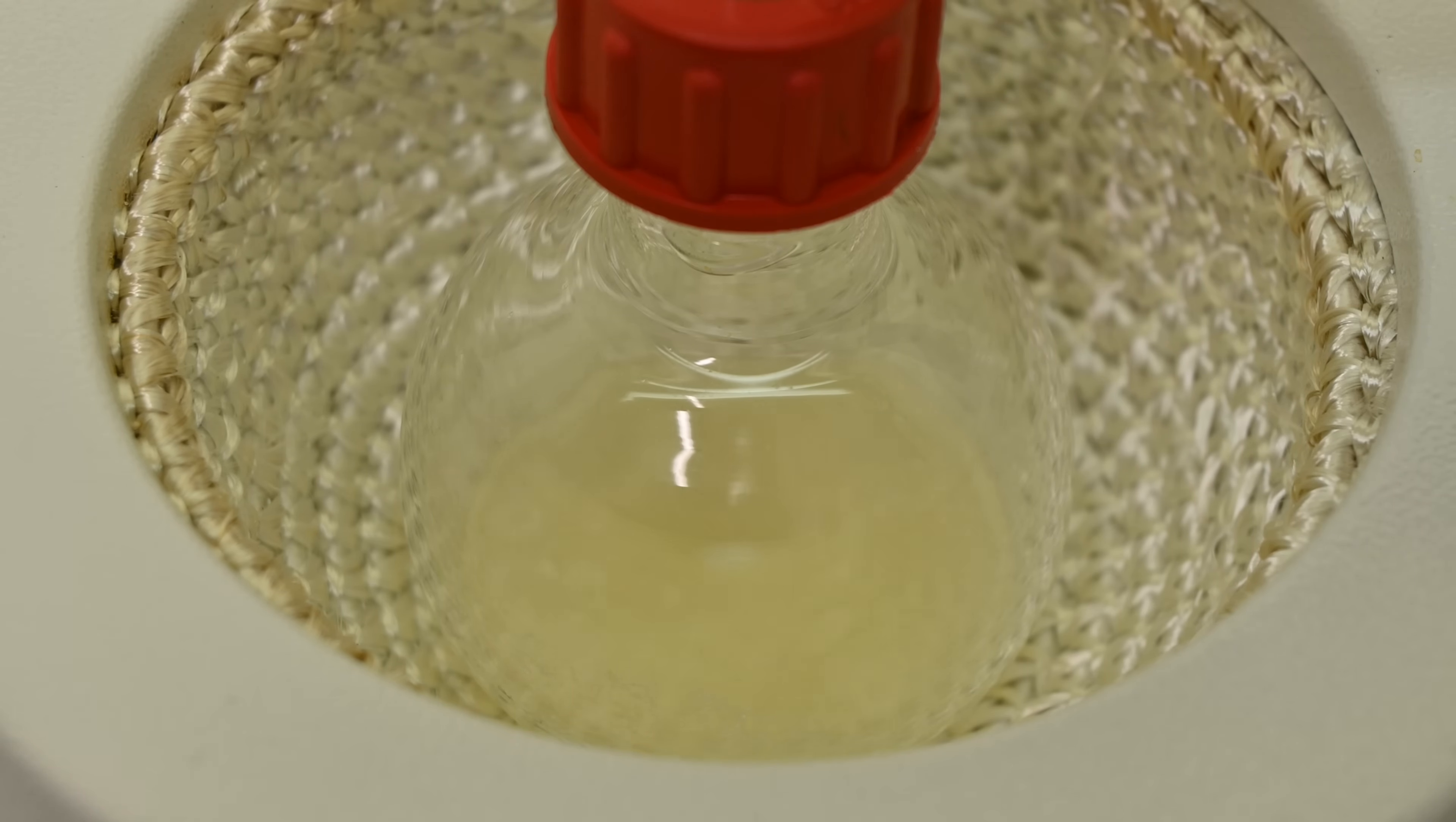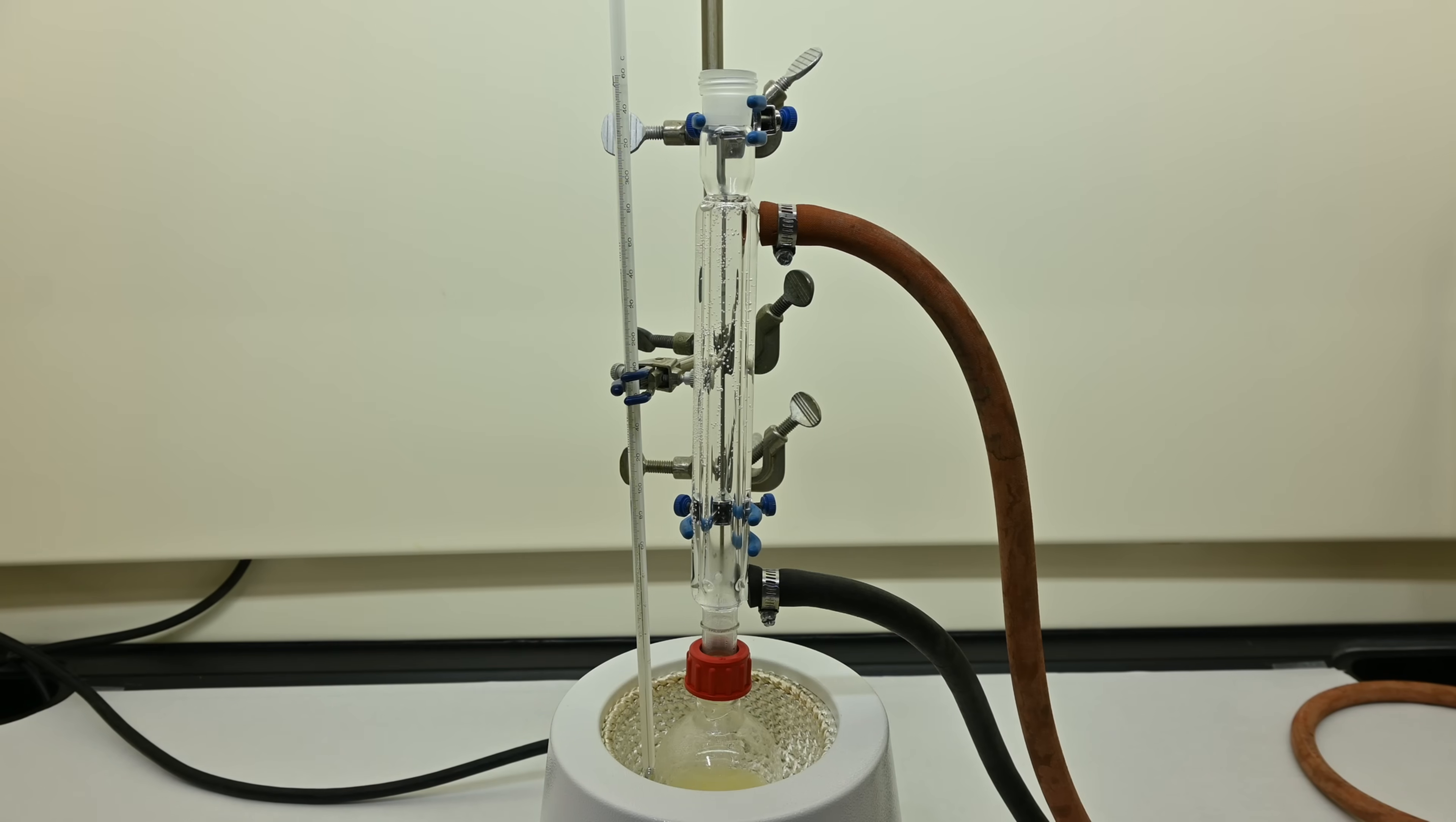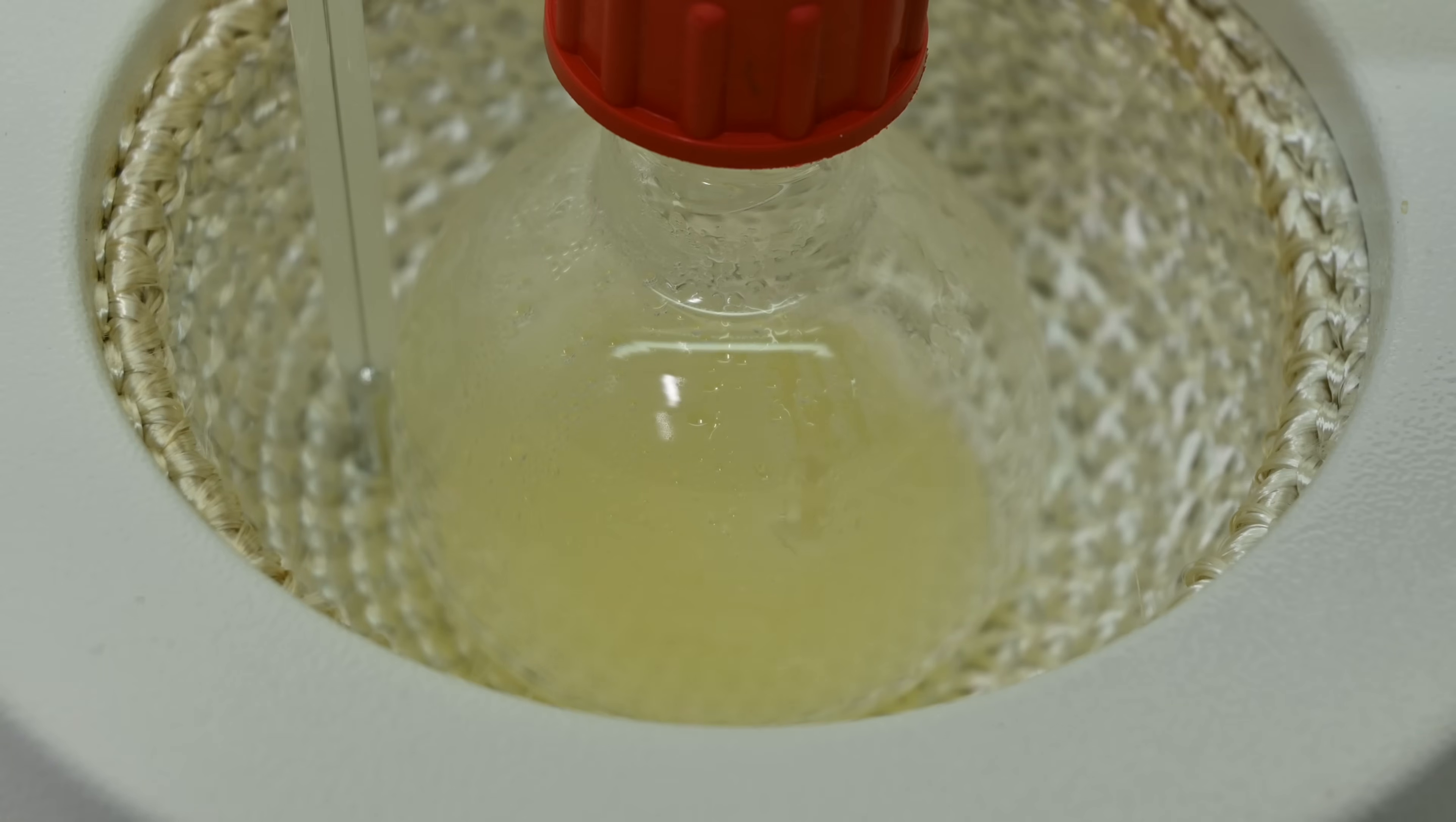Thionyl chloride reacts with carboxylic acids like P-nitrobenzoic acid, replacing the hydroxyl group with a chlorine, and producing an acyl chloride, a much more reactive intermediate that I'll later use in this synthesis. Think of it as swapping out a weaker attachment, the OH group, for a stronger, more reactive chemical handle, the chlorine, that can better participate in the downstream reactions.